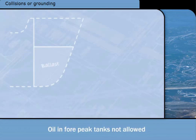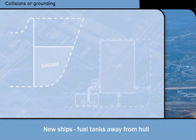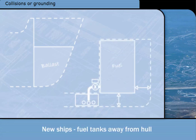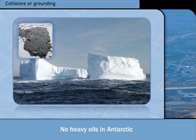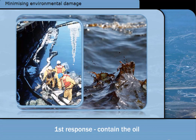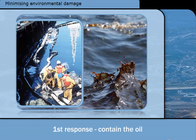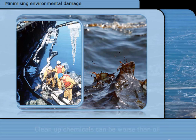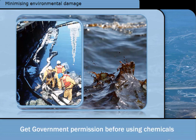Most ships are not allowed to carry oil in forepeak tanks, where it is most exposed to damage and leakage in the event of a collision or grounding. To limit bunker spills from new ships following collision or grounding, their fuel tanks are required to be positioned away from the hull. The carriage of heavy oils in the Antarctic area is now banned due to the difficulty of cleaning them up in cold conditions and the remoteness of the area. The first response is usually to try to contain the oil, preventing widespread damage and making it easier to remove using physical means such as absorbents, brooms, spades, or vacuum skimmers. The use of inappropriate chemical dispersants can cause worse pollution than the oil alone, and it is often the case that the local government's permission is required before they are used.